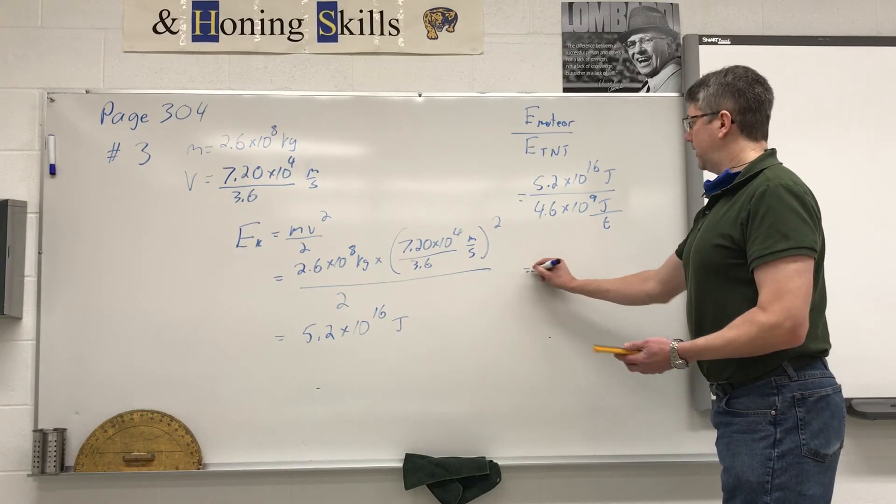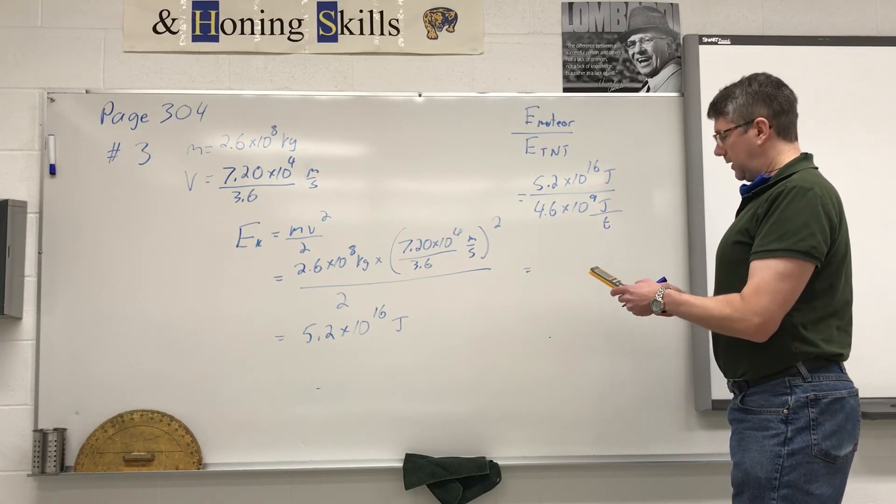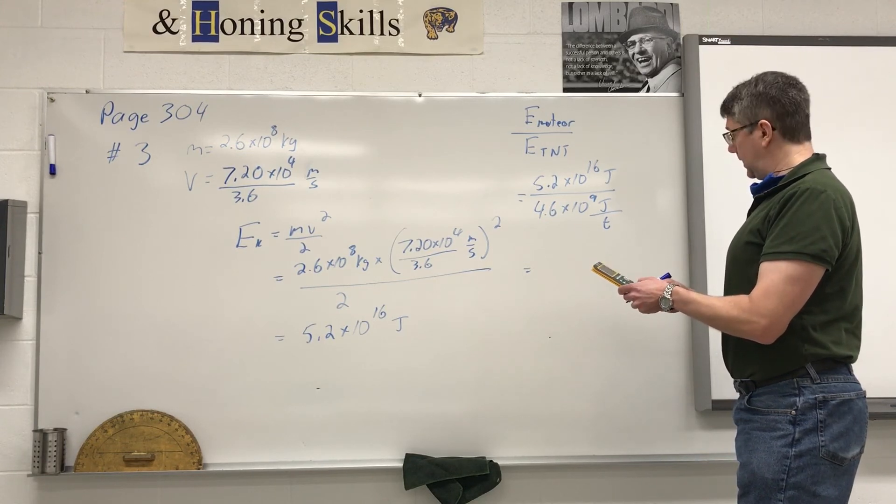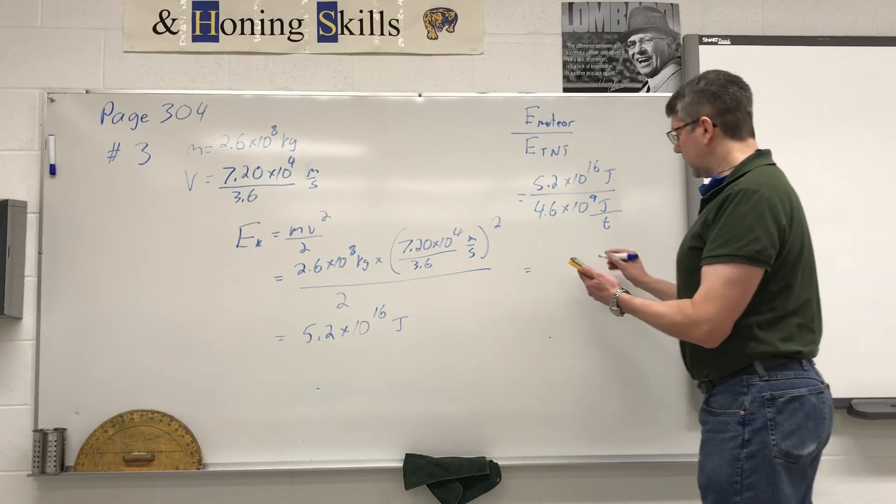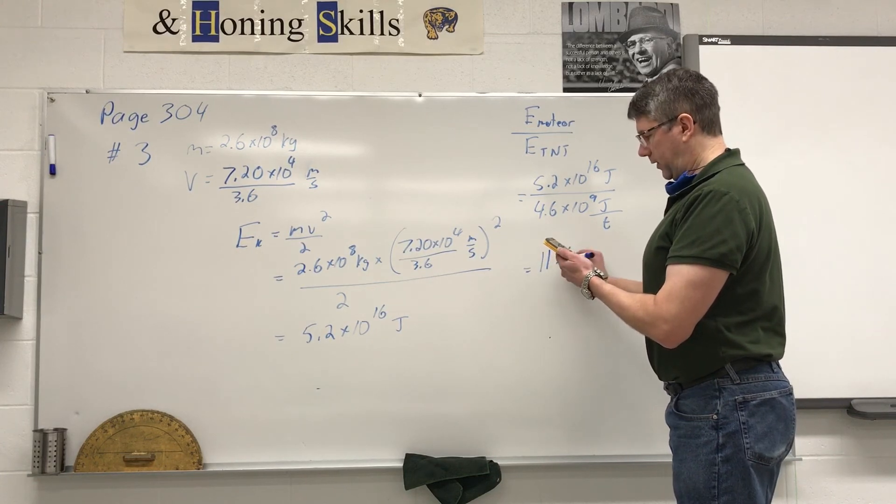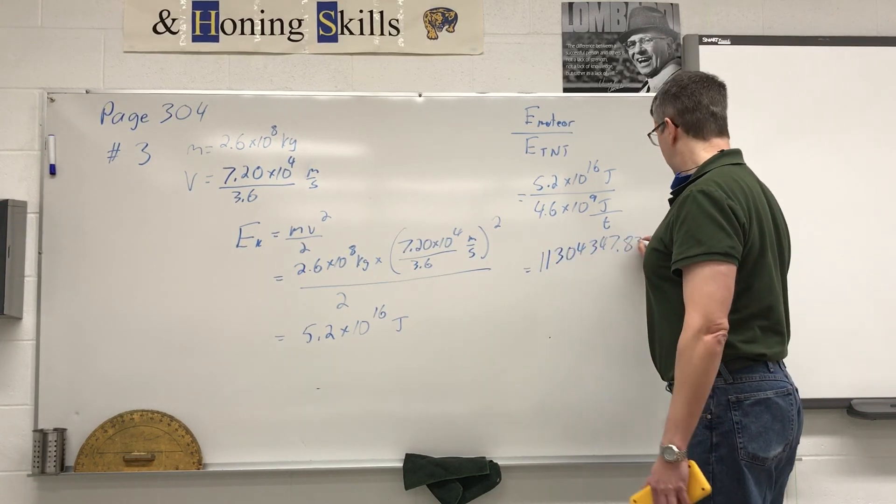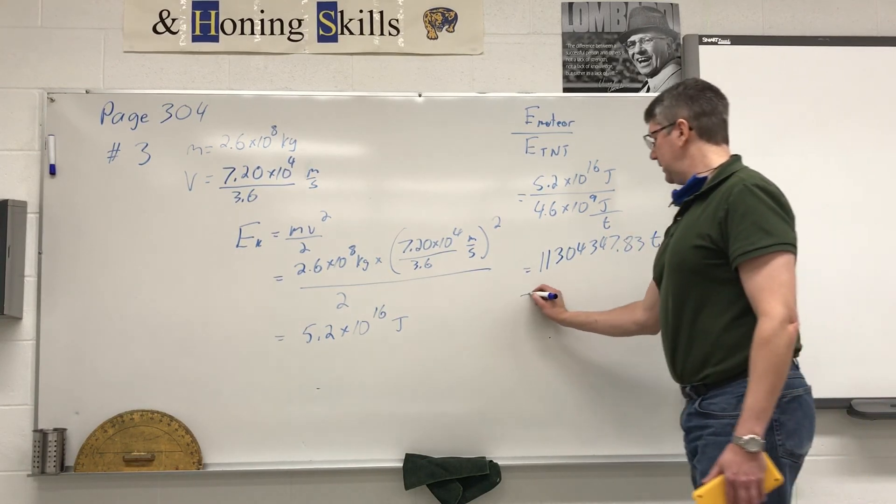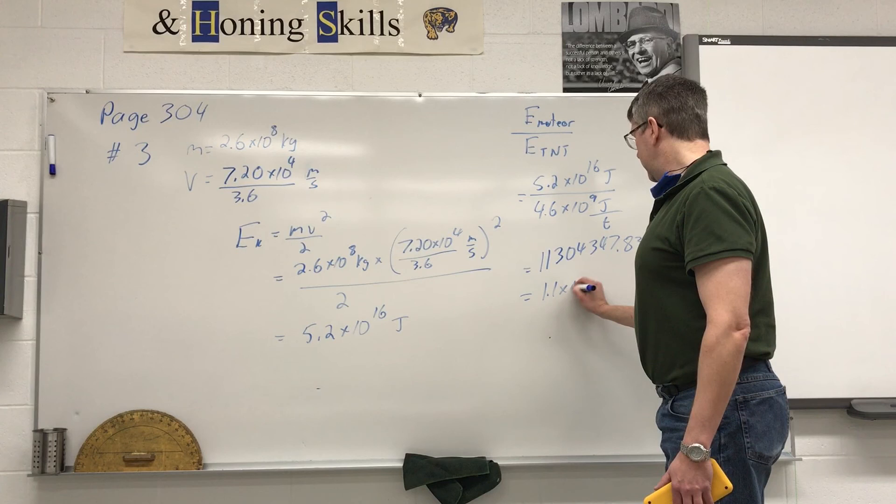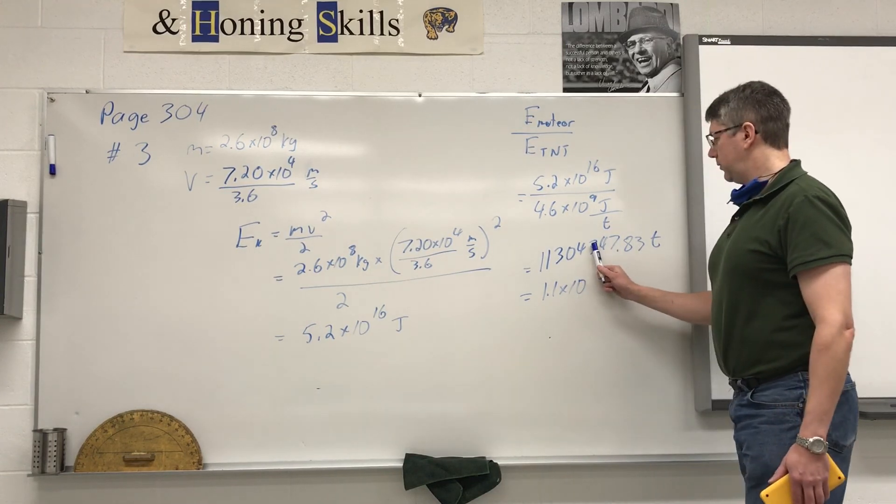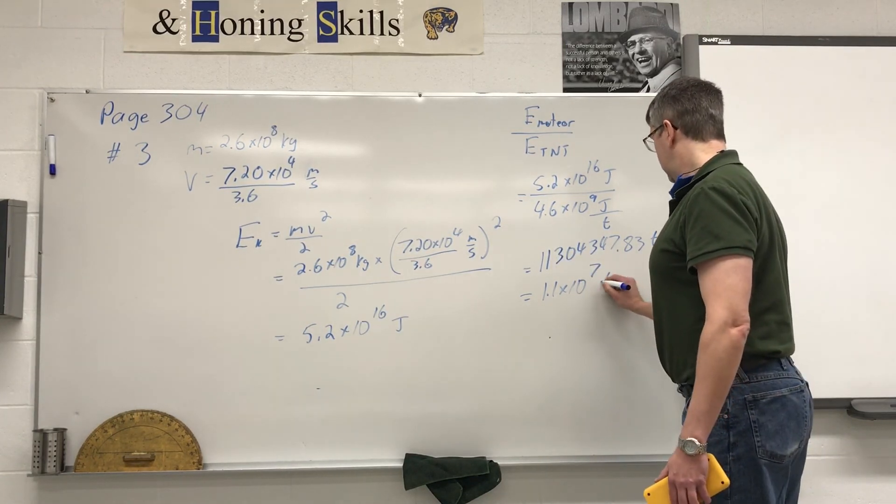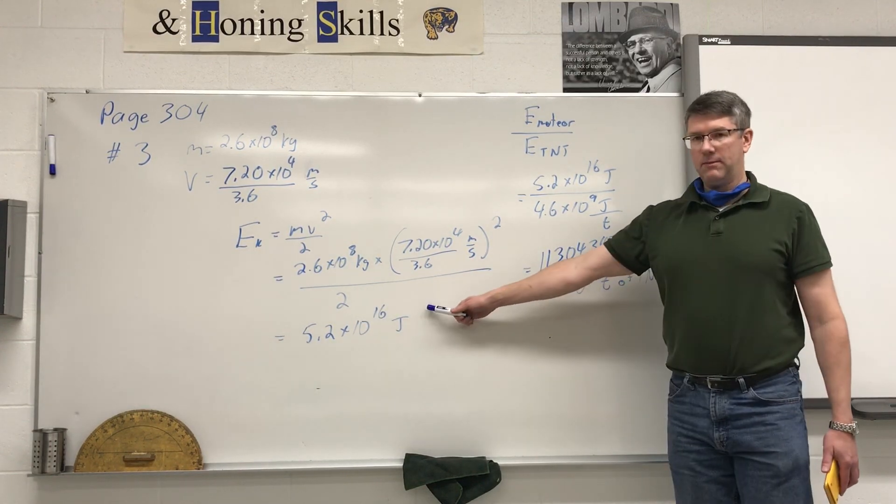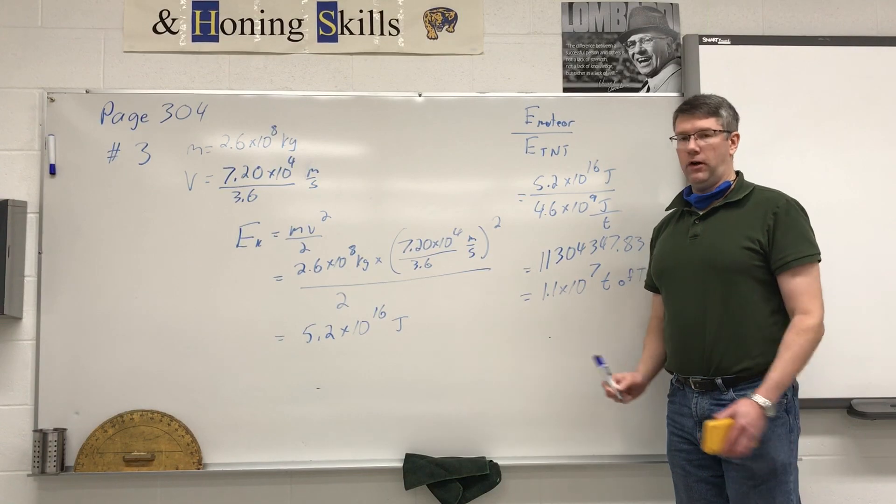So when we divide these we have 5.2 EE 16 divided by 4.6 EE 9 gives me 11304347.83. The joules cancel out and we're left with tons of TNT. So it's going to be 1.1 times 10 to the power of 7 tons of TNT are required to give us the same amount of energy as the kinetic energy of the meteor.